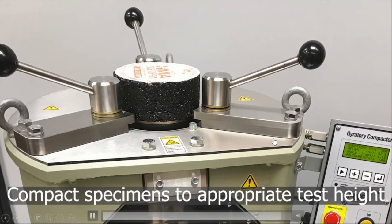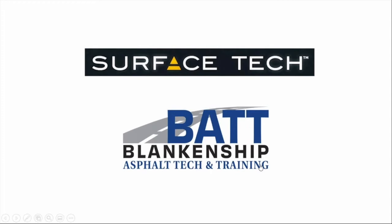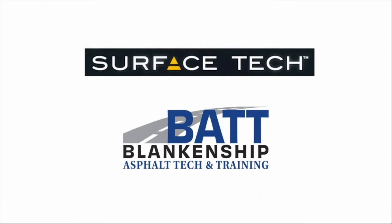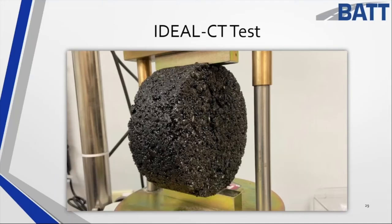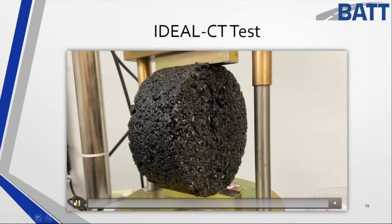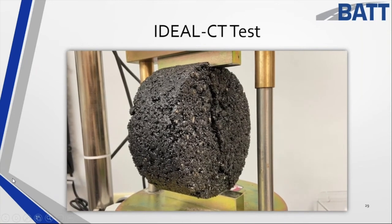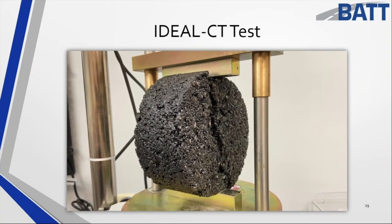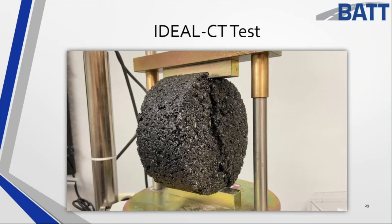Could you take field mixture, heat it back up, and add fiber to it? Absolutely — run a control and do the same with it, then check it with your fiber and you'll see the benefits. This is an Ideal CT test: after making the sample, letting it cool, and conditioning it in water, you put it in the Ideal CT test, and the test is as quick as what you're seeing here — after about 20 seconds or so, you'll be done with that sample, and then you pick up another one and run it.